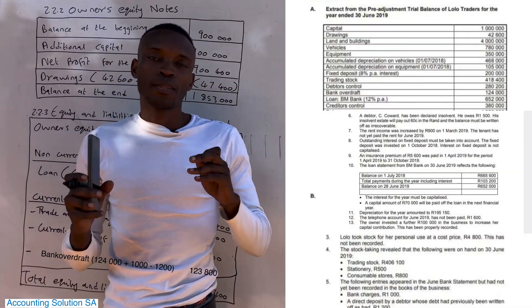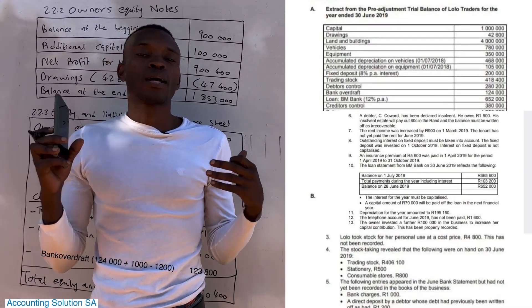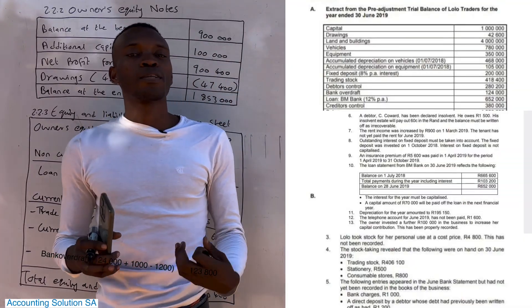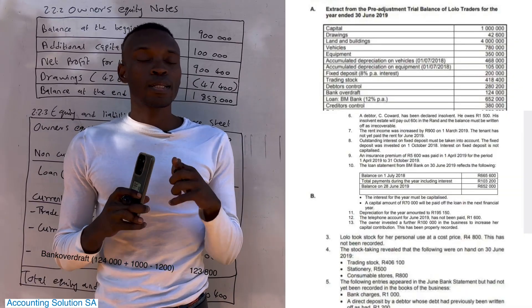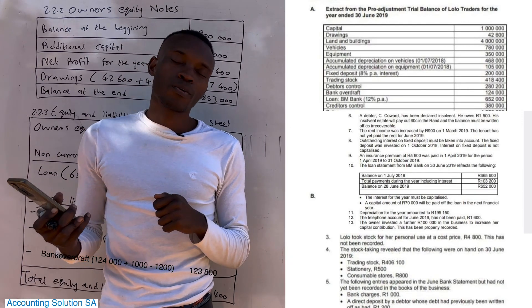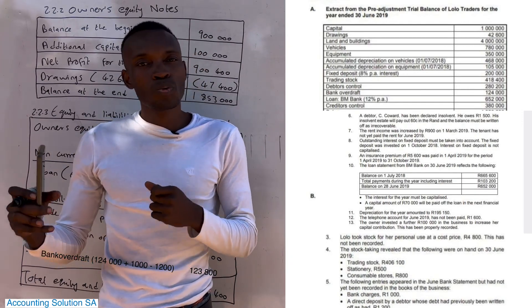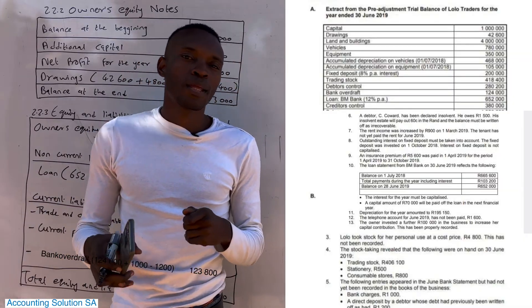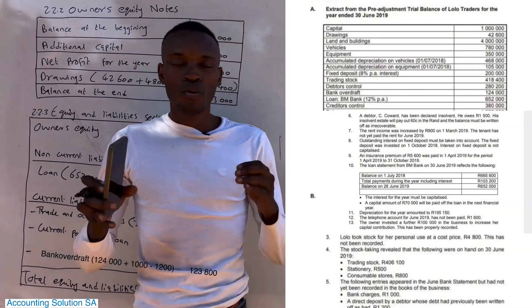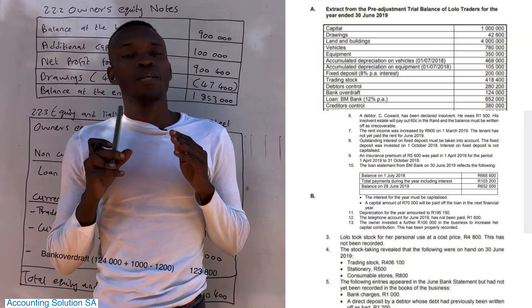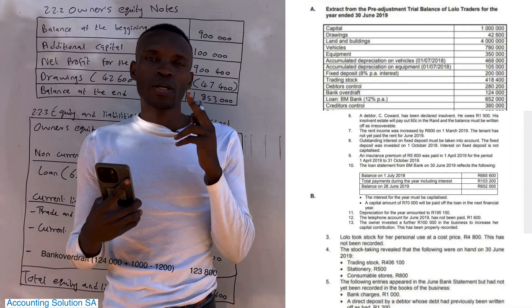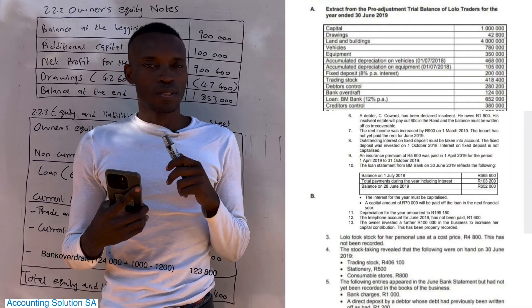Those who want to join extra classes, they are still available — Mathematics, Math Literacy, Economics, Accounting, and Business Studies from Grade 10 to Grade 12. Make sure you join as early as possible. The study guide is a soft copy for only 100, available on WhatsApp. I will see you in the next one — I hope you subscribe so that you can watch the other videos. See you.